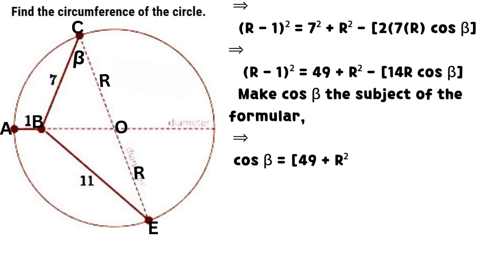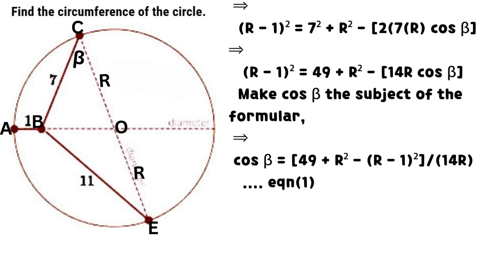Simplify and make cosine beta the subject of the formula. It signifies that cosine beta equals the sum of 49 and the square of R minus the square of (R minus 1), all divided by 14 times R. We call it equation 1.